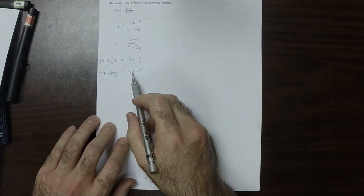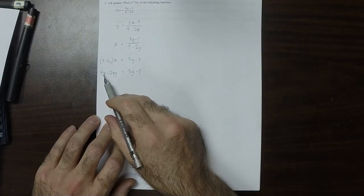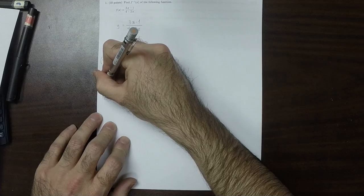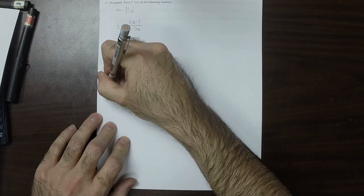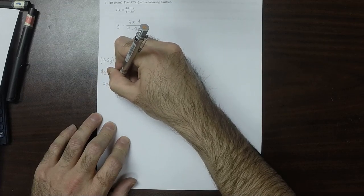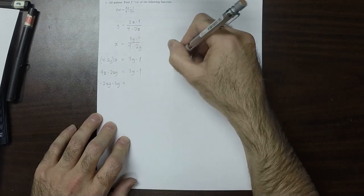Now notice that there's four terms: 1, 2, 3, 4. Two of them have y and two of them do not. So I'll move the ones that have y to the left-hand side, those without to the right-hand side.